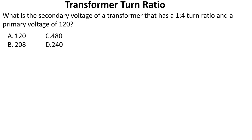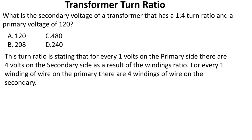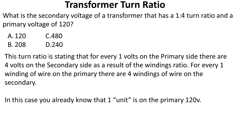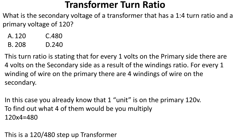What is the secondary voltage of a transformer that has a one-to-four ratio and a primary voltage of 120? This turn ratio states that for every one volt on the primary there are four volts on the secondary — for every one winding on the primary there are four windings on the secondary. We already know the one unit: it's 120. Multiply 120 by four to get 480. This is a 120/480 step-up transformer and we select C.